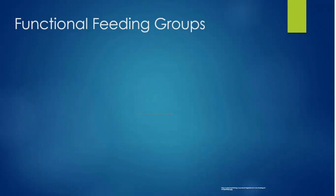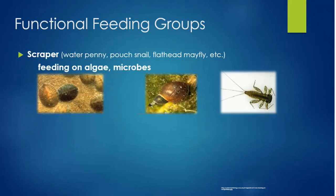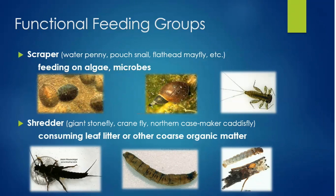We can also categorize macroinvertebrates by functional feeding groups. Scrapers like the water penny, pouched snail, and flathead mayfly scrape and feed on algae and microbes on rocks from the stream bottom. Shredders like the giant stonefly, cranefly, and the northern casemaker caddisfly shred and eat leaves and other organic matter in the water.